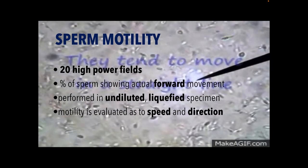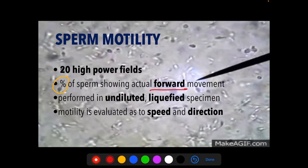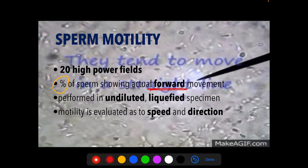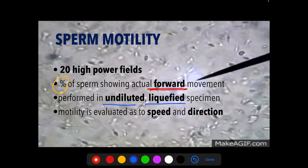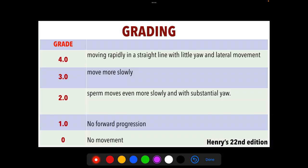For sperm motility, it is observed in 20 high-power fields and the percentage of sperm showing actual forward movement is recorded, performed on undiluted liquefied specimen. Motility is evaluated based on speed and direction. The grading from Henry's 22nd edition: grade 4 — moves rapidly in a straight line with little yaw; grade 3 — moves more slowly; grade 2 — moves even more slowly with substantial yaw; grade 1 — moving but no forward progression; grade 0 — no movement.